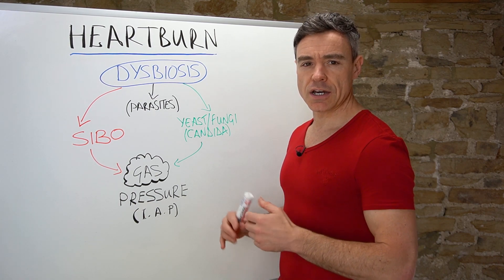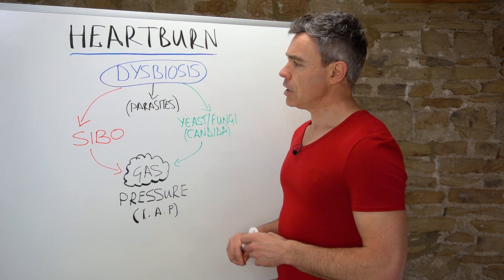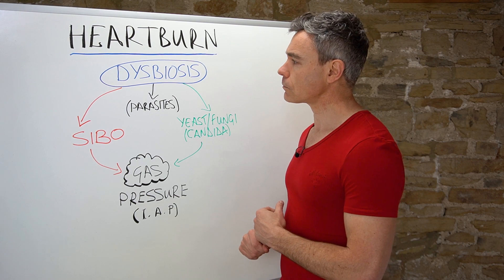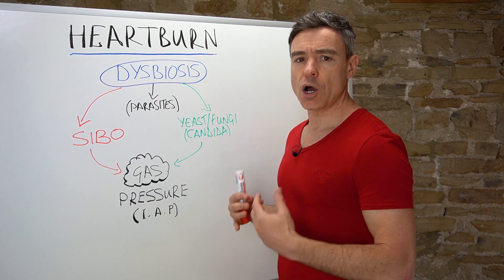The dysbiosis can take a number of different forms. It's not going to be the same in every individual person, but there are probably three main types of dysbiosis in terms of bad bugs that shouldn't really be there overgrowing in the digestive system.